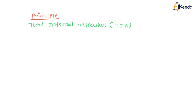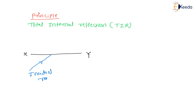We know that whenever light travels from one medium to another medium, it simply bends or changes its path. It depends on which medium the light is coming from and where it is going. Suppose we draw one surface XY, and we draw one incident ray. If we also draw a normal — which is perpendicular to the plane — we can then draw the refracted ray.